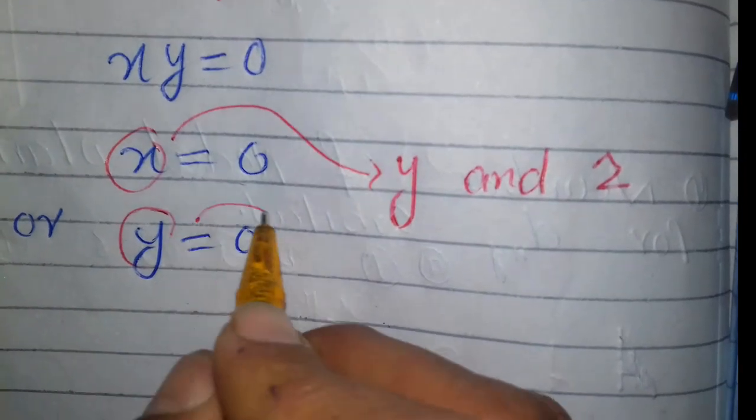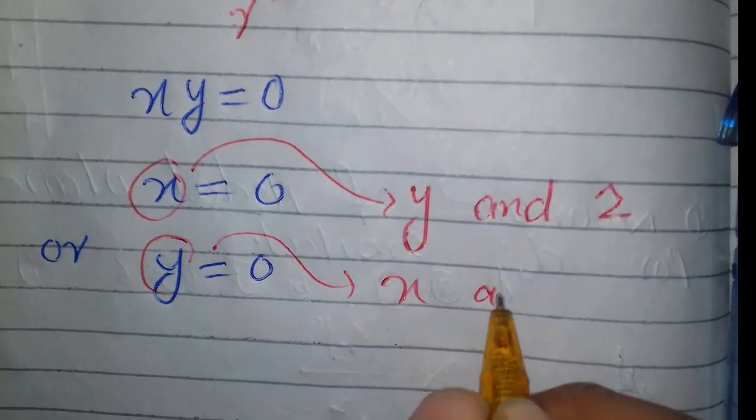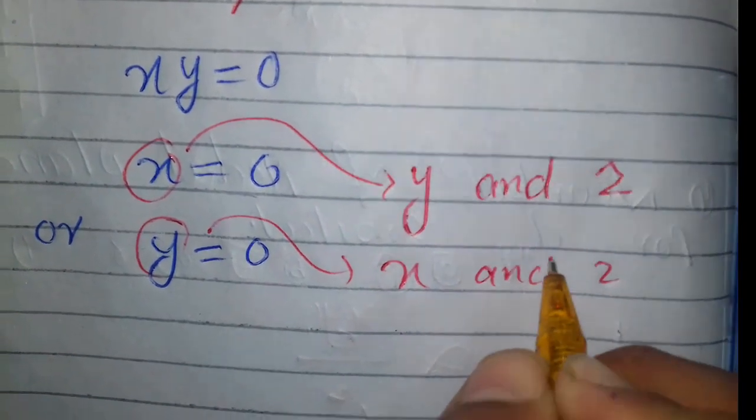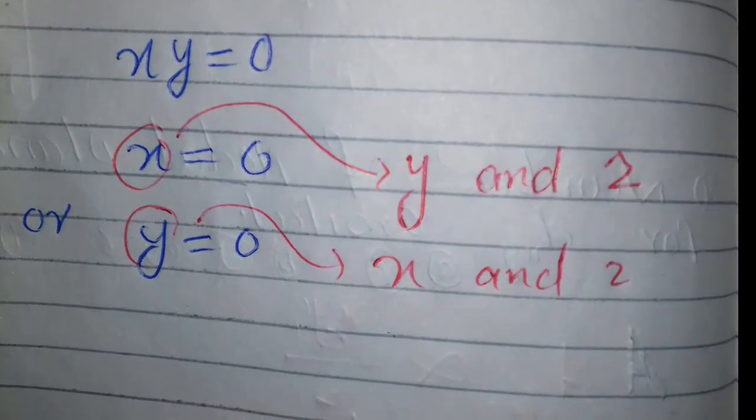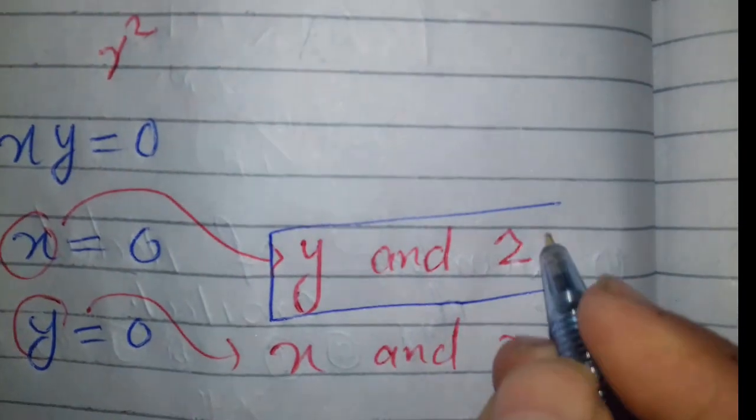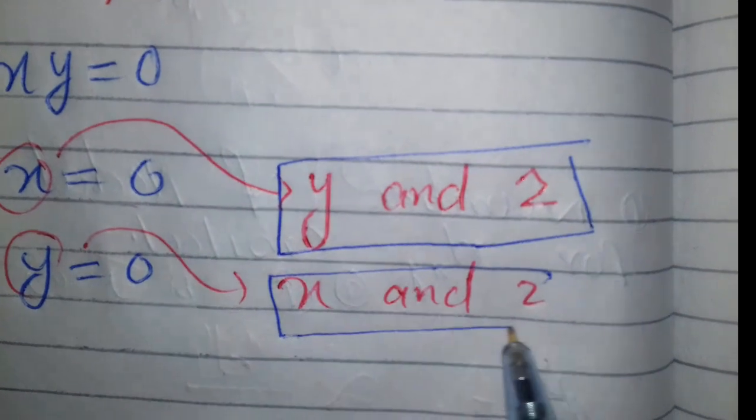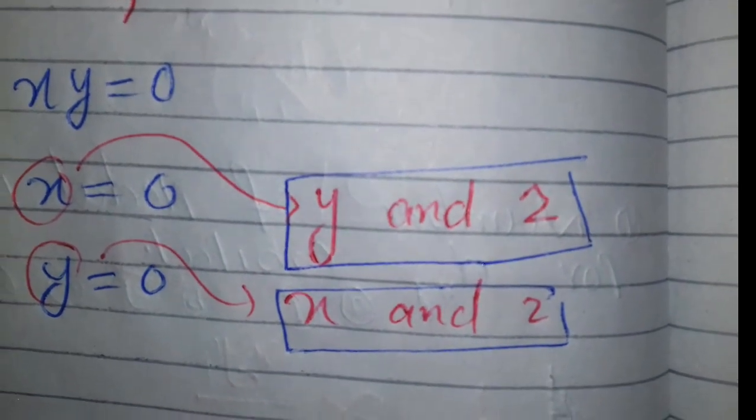And Y equals zero defines the XZ Cartesian plane. So now YZ and XZ are the planes.